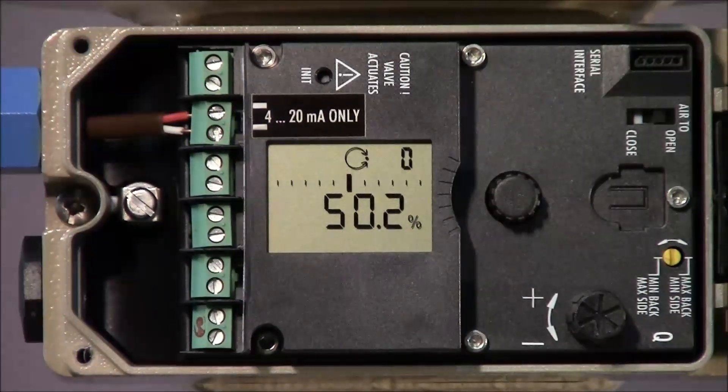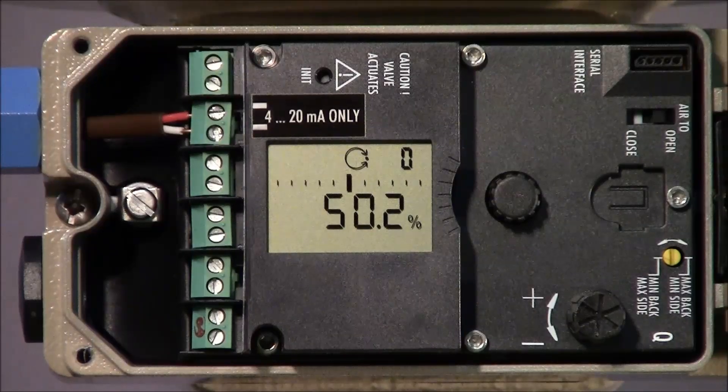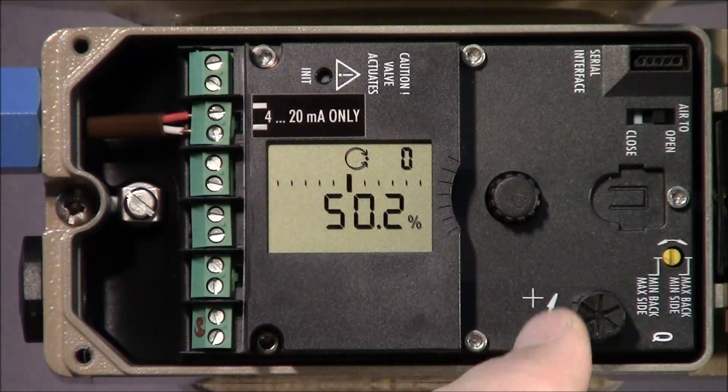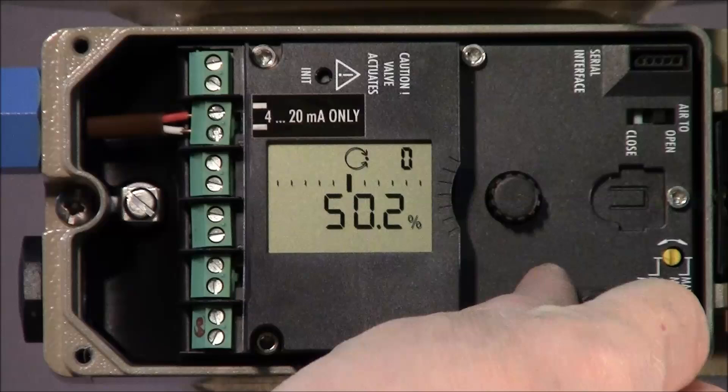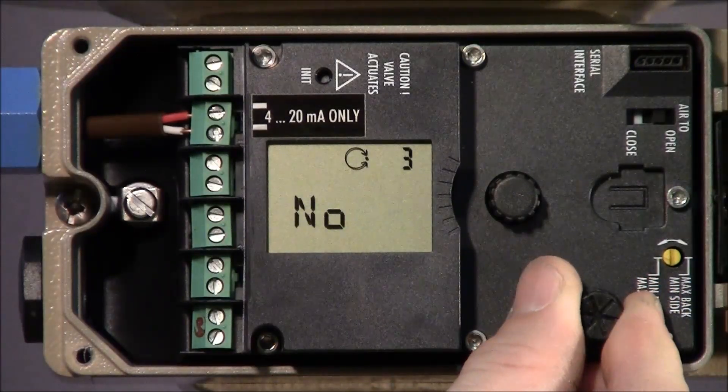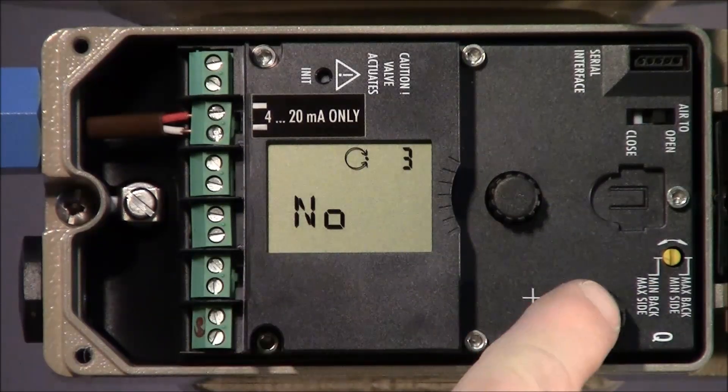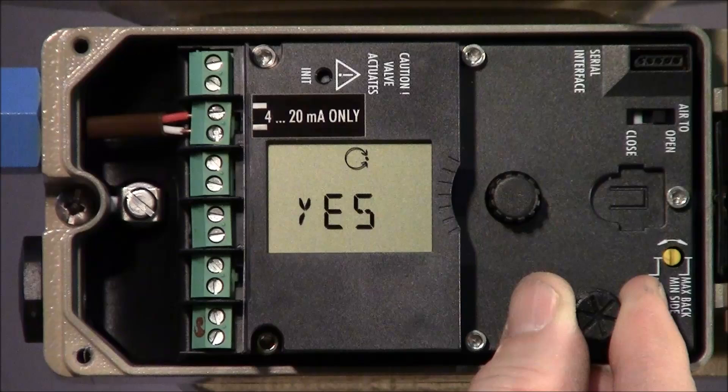To begin, we must enter the configuration mode before any changes can be made. Using the rotary push button, turn it until parameter 3 is shown and push the button. Turn again until the display shows Yes and push to accept the change.